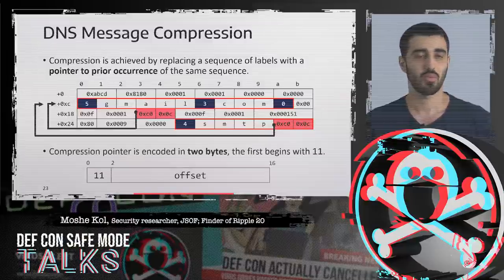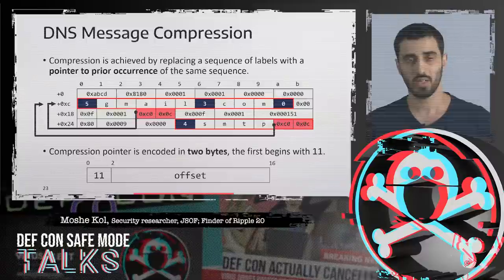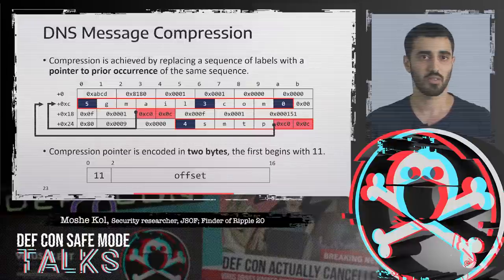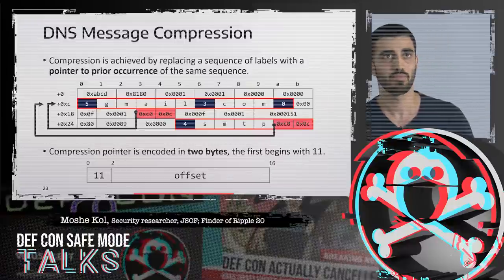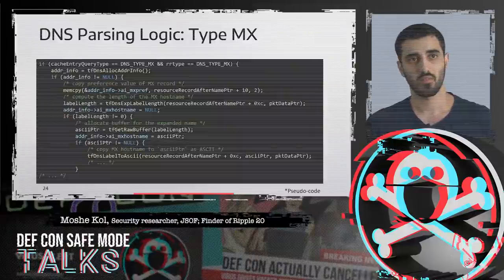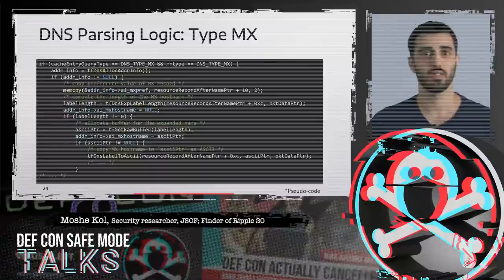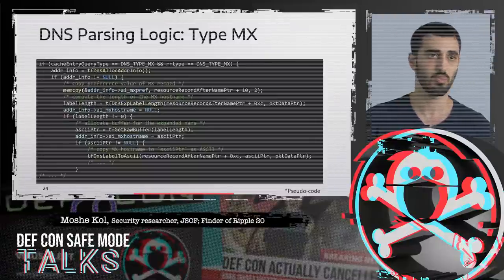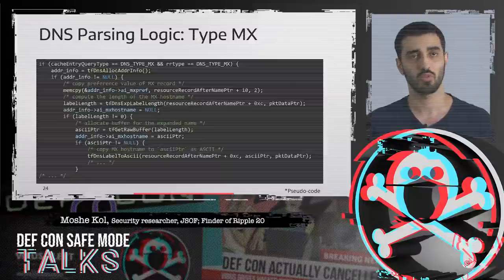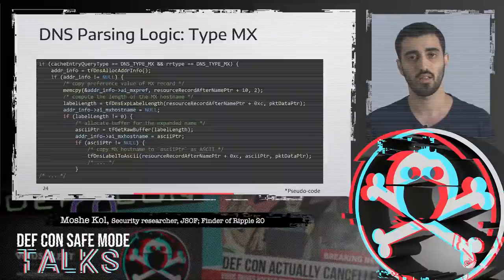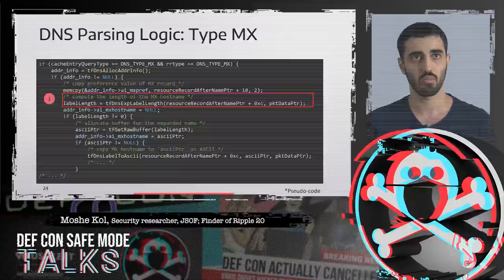In the compression scheme, compression pointers are encoded in two bytes. The first byte begins with 1-1 as the most significant bits, and the other 14 bits specify an offset from the start of the header. As Shlomi said, the vulnerabilities reside in the DNS resolver of Trek TCP/IP. We find them in the DNS parsing logic in the stack, specifically in a function called tfdns_callback.